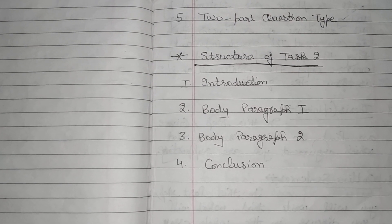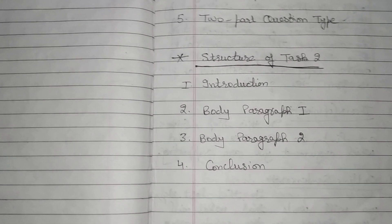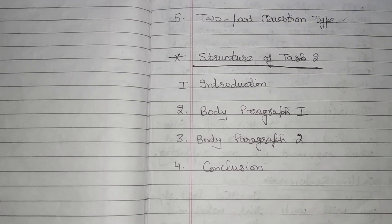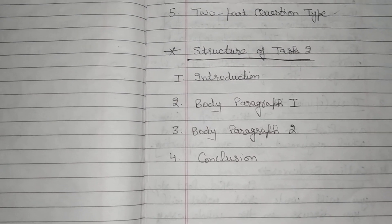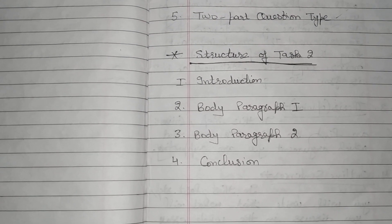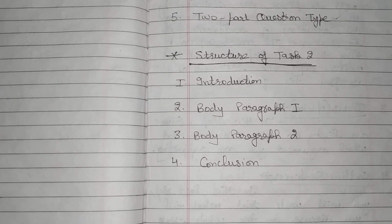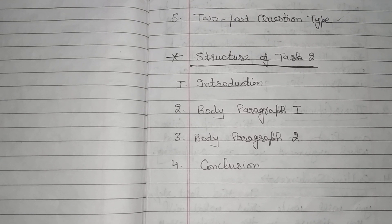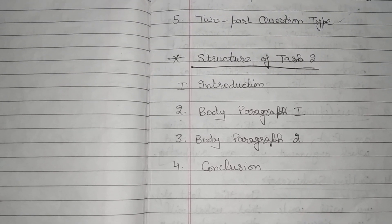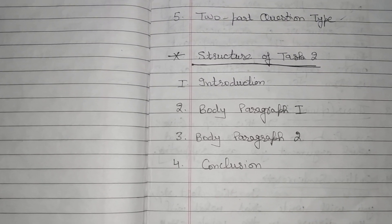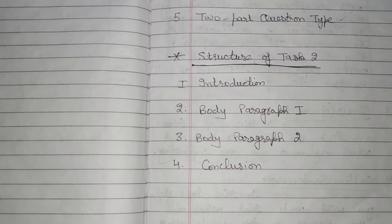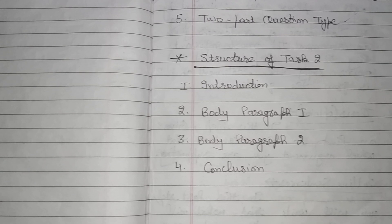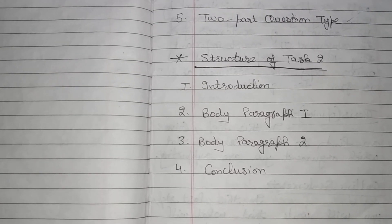Now let's discuss the structure of Writing Task 2. The structure is: first, the introduction; second, body paragraph 1; third, body paragraph 2; and fourth, the conclusion. That is the structure of Writing Task 2. Now let's discuss how to write the intro, body paragraph 1, body paragraph 2, and the conclusion.